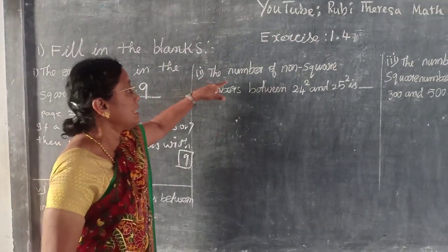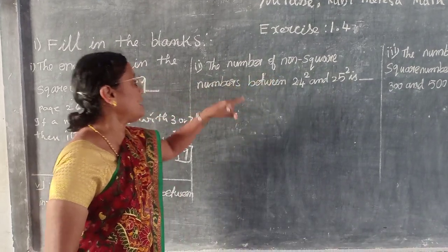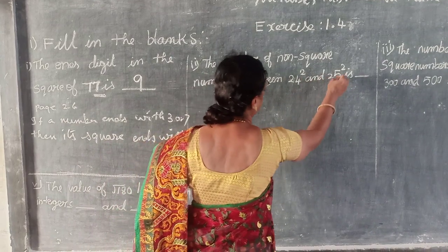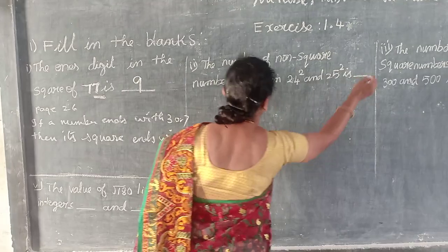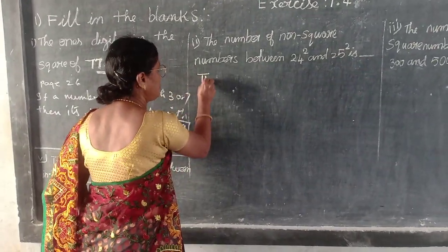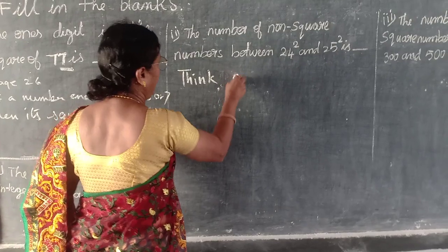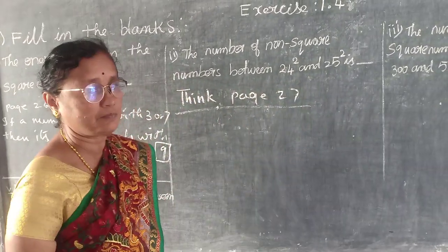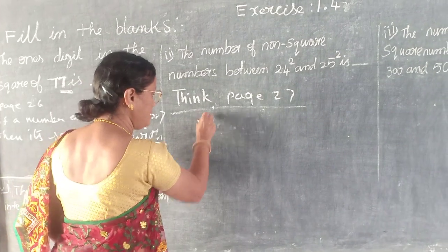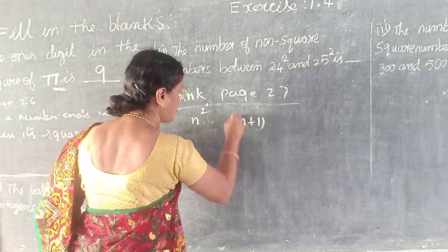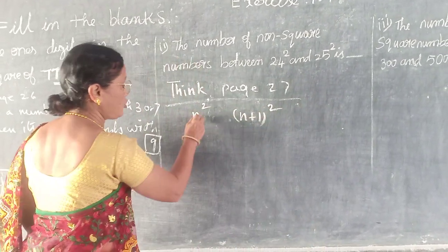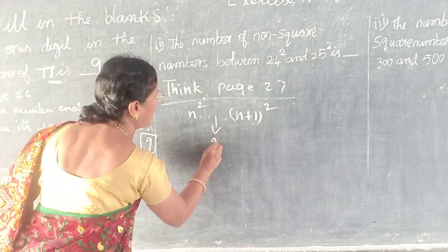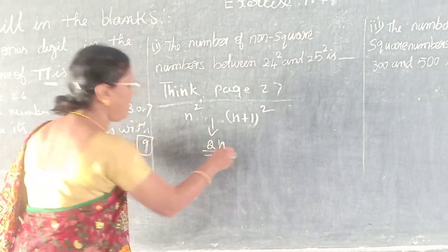Try to learn. The number of non-square numbers between 24² and 25² is blank. This is page number 27. Between N² and (N+1)², how many non-square numbers are there? 2N.